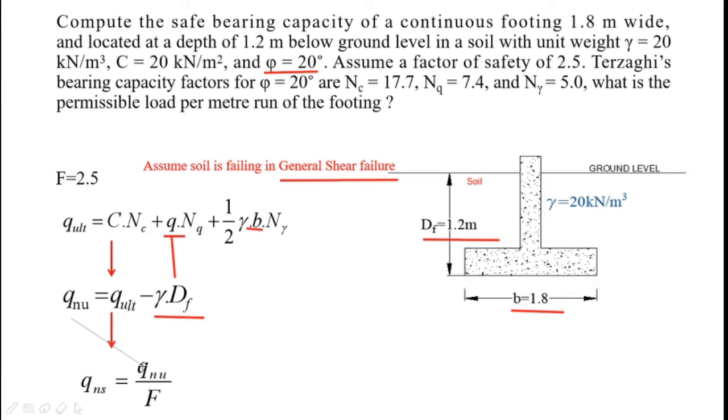Once you have done that, net ultimate bearing capacity is nothing but ultimate bearing capacity minus the value of q, that is γDf. This value of q has to be subtracted from Q_ult. You will get net ultimate bearing capacity. If you divide this net ultimate bearing capacity by factor of safety, that is 2.5, you will get net safe bearing capacity.